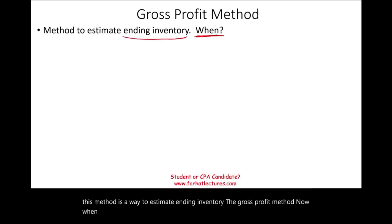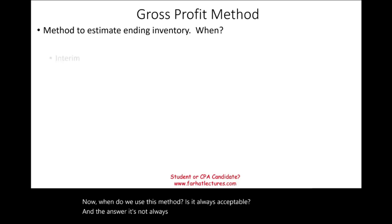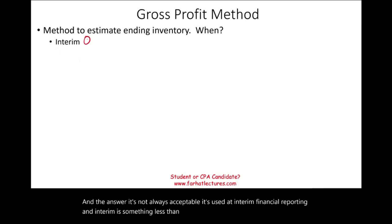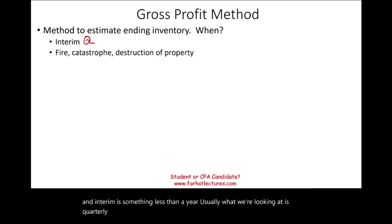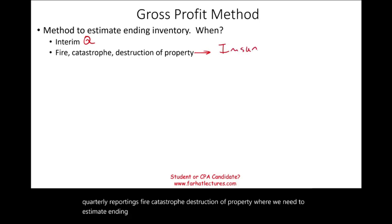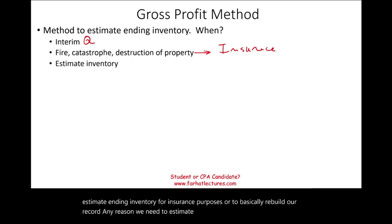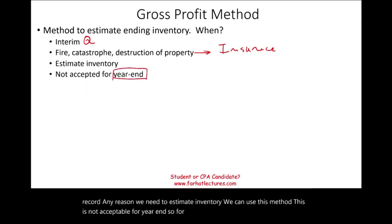When do we use this method? Is it always acceptable? The answer is no, it's not always acceptable. It's used at interim financial reporting — and interim is something less than a year, usually quarterly reportings — or in cases of fire, catastrophe, or destruction of property, where we need to estimate ending inventory for insurance purposes or to rebuild our records. Any reason we need to estimate inventory, we can use this method. This is not acceptable for year end; for the year end, you cannot use the gross profit method. You have to count the inventory.